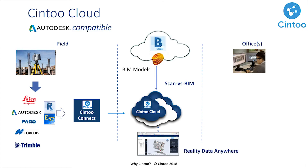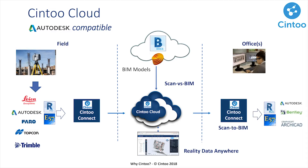We enable scan versus BIM by pulling the 3D BIM model from BIM 360 Docs and overlaying it on top of the scan data to compare the as-built to the design intent. We enable scan to BIM by exporting back the scan data as a unified RCS file or a structured E57 file for consumption in your CAD software.